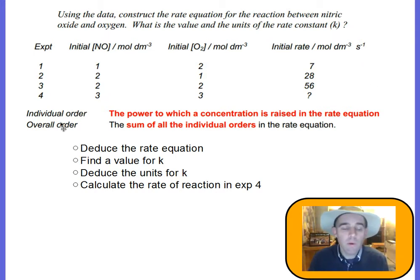Someone here has done four experiments, and they've changed the concentration of NO and O2, and they've measured the rate in moles per dm³ per second—concentration over time. What we want to work out for NO and O2, the two reactants, is their order, the individual order. That's the power to which the concentration is raised in the rate equation. The higher their order, the greater the effect they have on the rate of reaction.